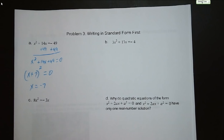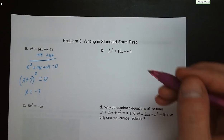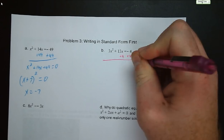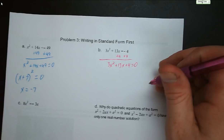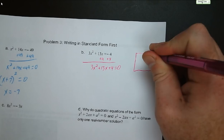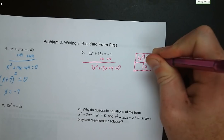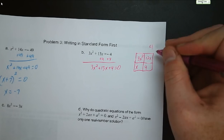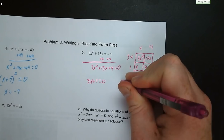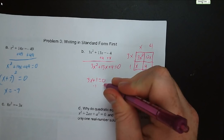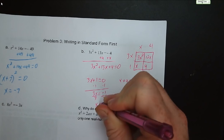Letter B: we've got 3x squared plus 13x equals negative 4. Add 4 to both sides: 3x squared plus 13x plus 4 equals 0. We're looking for factors of 12 that add up to 13. Using the box, we have 3x squared, 4, 12x, and x. So we get 3x plus 1 times x plus 4. Then 3x plus 1 equals 0 gives x equals negative 1 third, and x plus 4 equals 0 gives x equals negative 4.